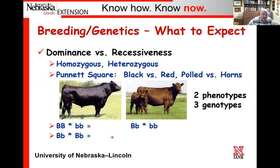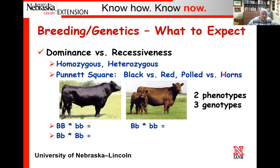Black could be homozygous dominant or heterozygous. The red animal is obviously homozygous recessive. Given that simple information, your students ought to be able to say: if we're given various genotypes and mate them together, what percentage of the offspring would be red, black, or homozygous black? The same thing applies for polled versus horns—the polled trait is dominant and the presence of horns is the recessive trait.